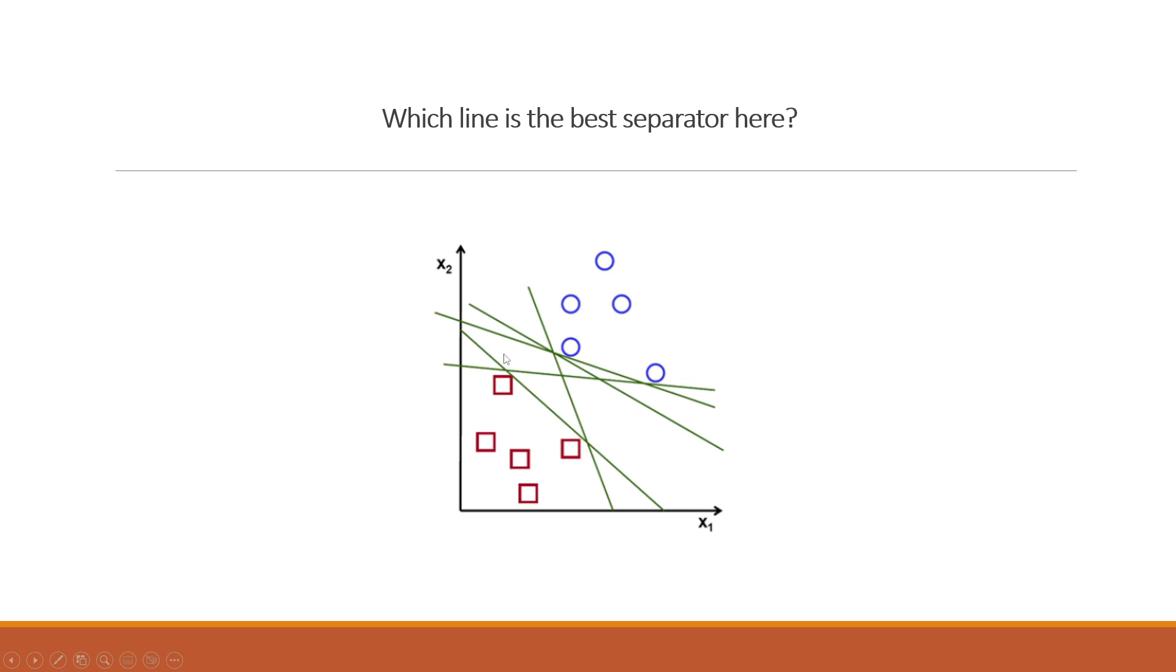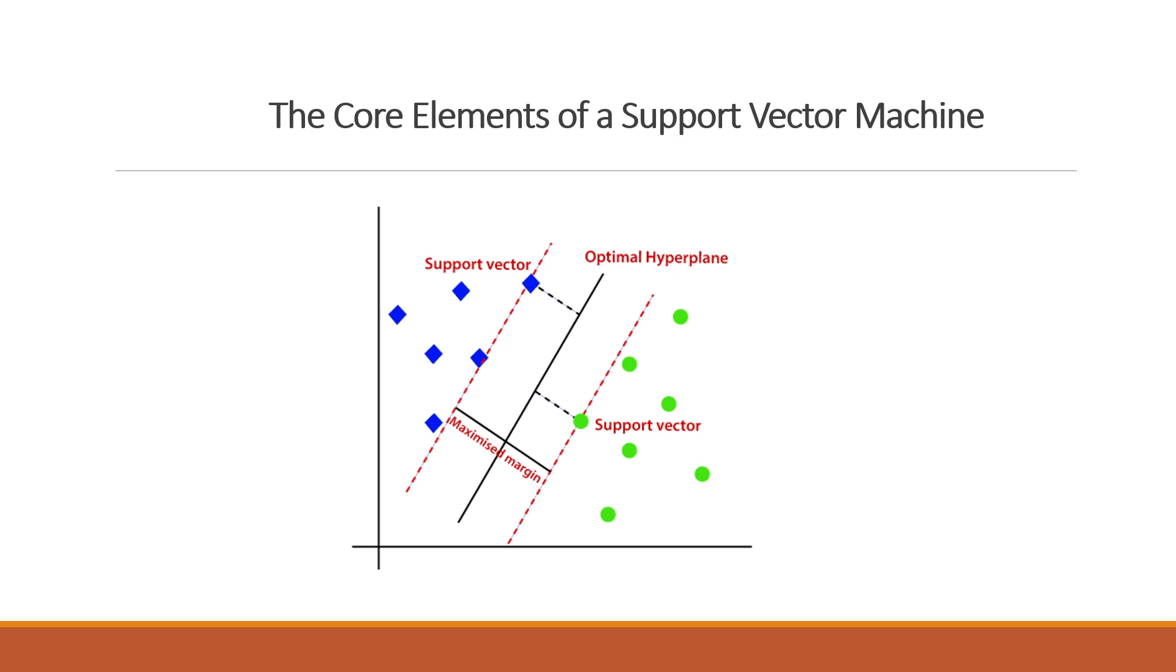We can separate them in many different ways. These are all the straight lines that can separate them. But what is the right way to separate them? In support vector machine, it finds the maximum margin between two classes.